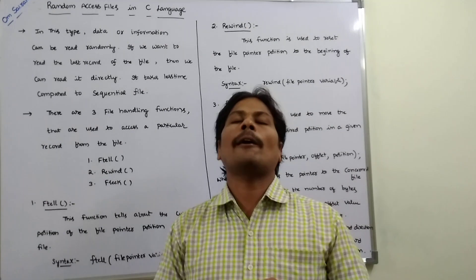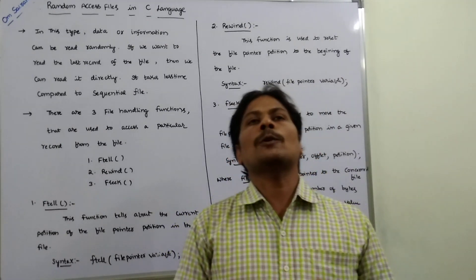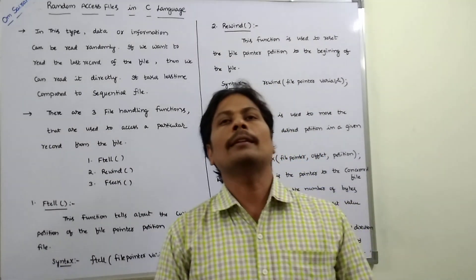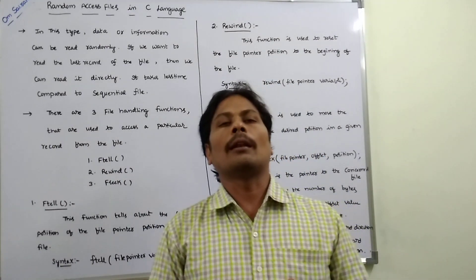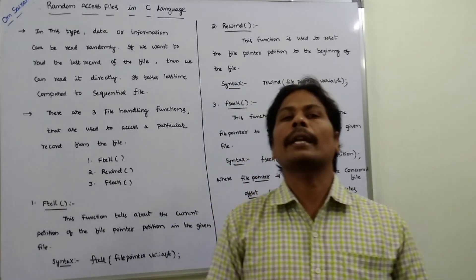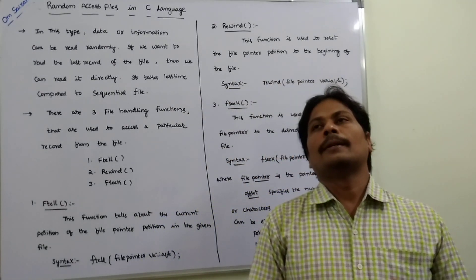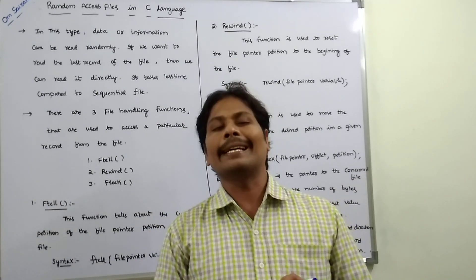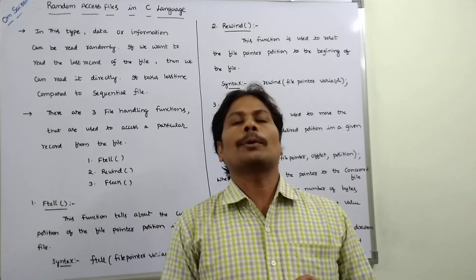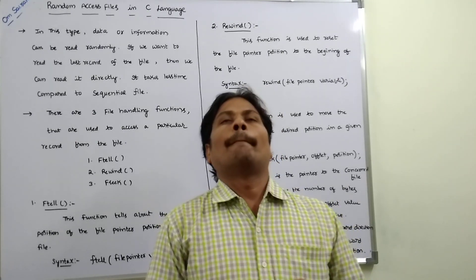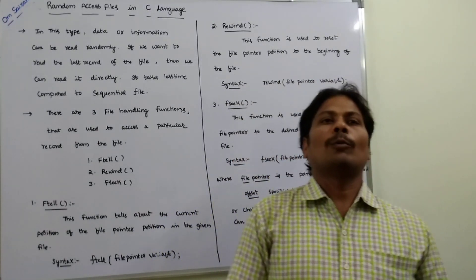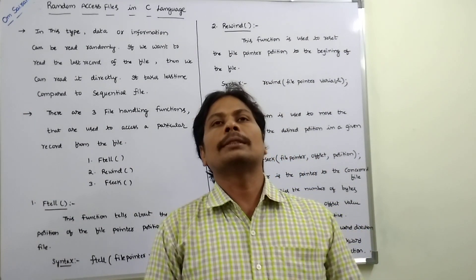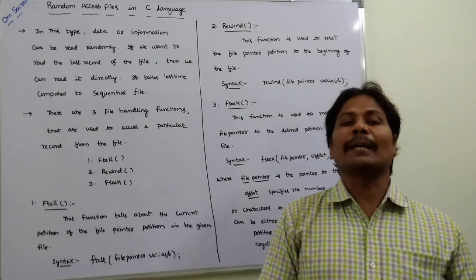But in the case of Random Access Files, suppose we want to access the last record of the file, we can directly go to the last record and then access that record. Sequential accessing is like a linear search — it takes more time. But in the case of Random Access, we can access whatever record we want; that record can be accessed randomly.